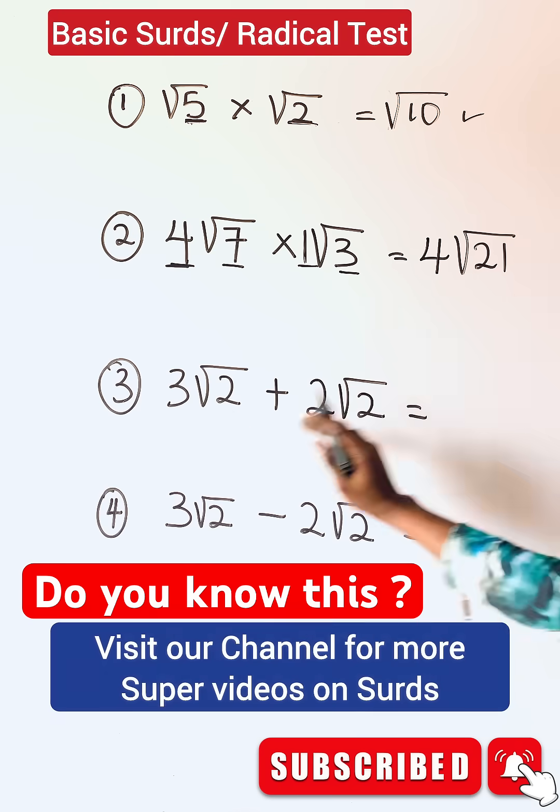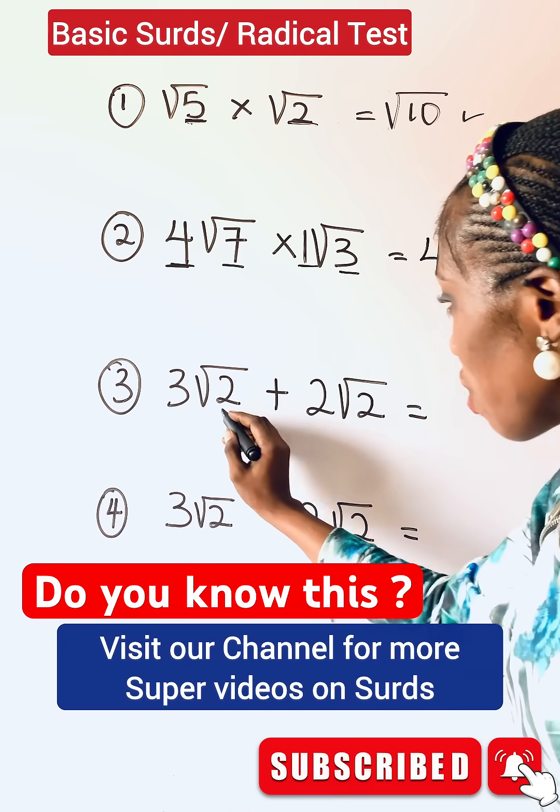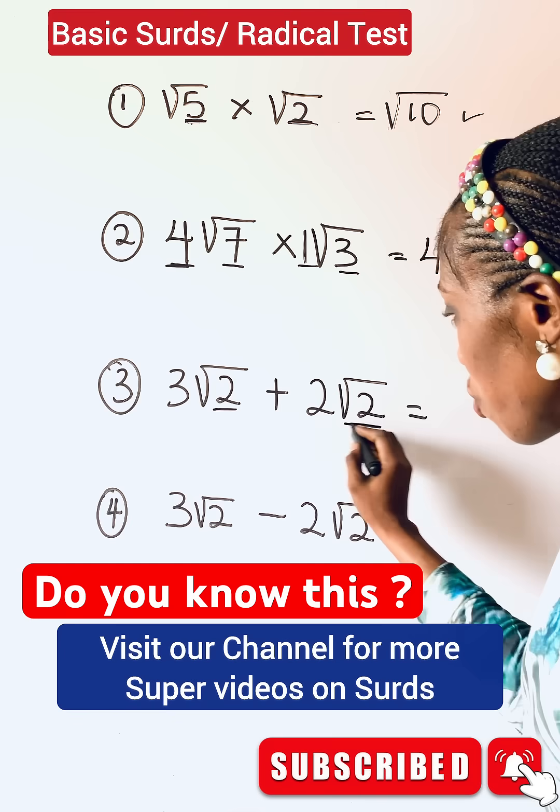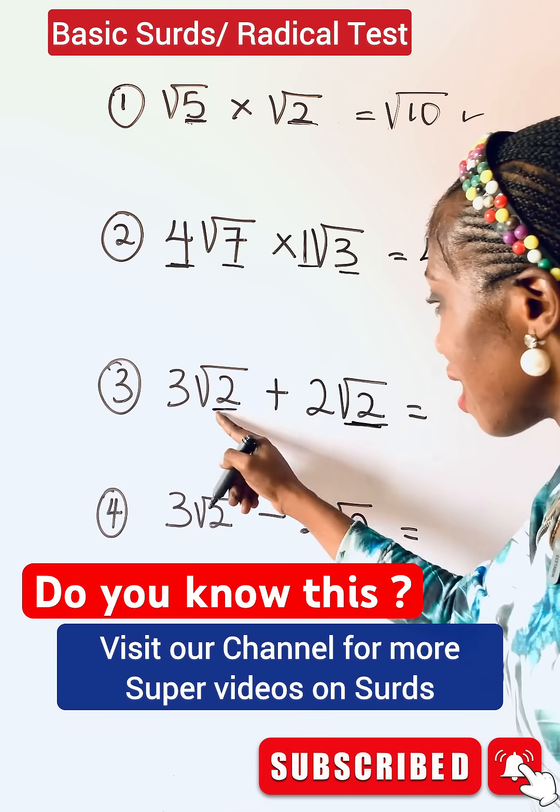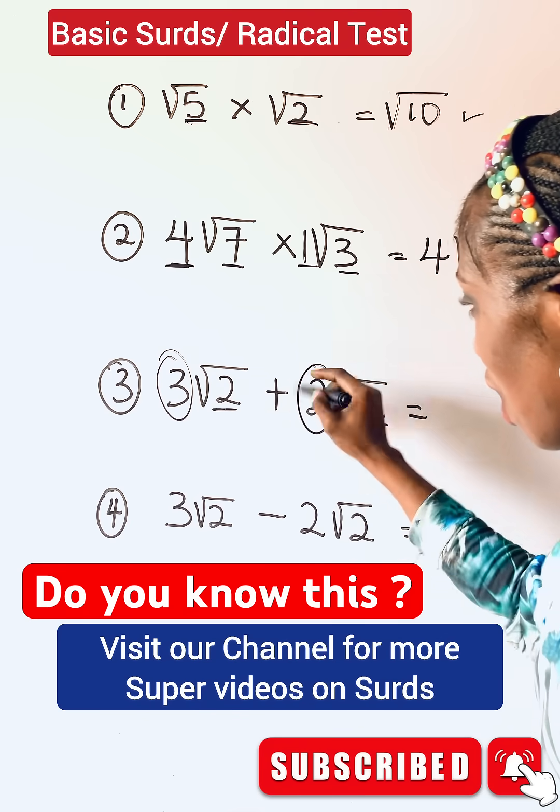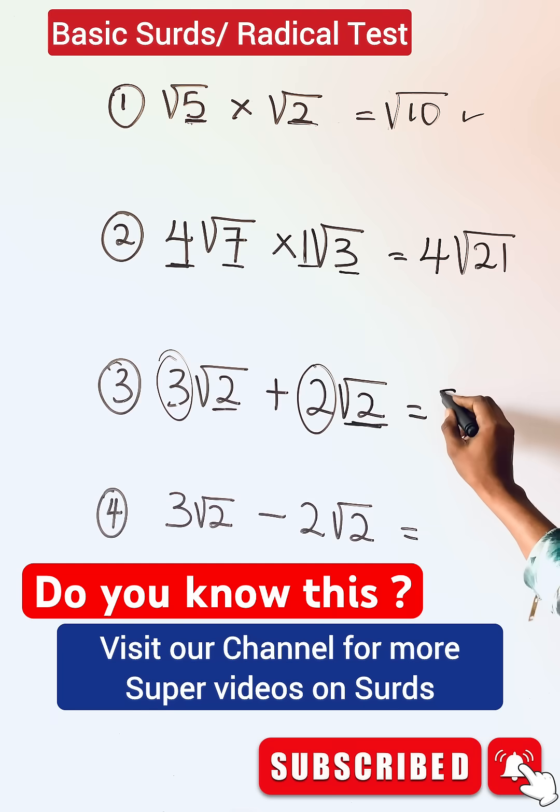When you are adding or subtracting, the radicals must be the same. Since these are the same, you add the coefficients. So this plus this is giving you 5. Take one of the radicals and this is what you have.